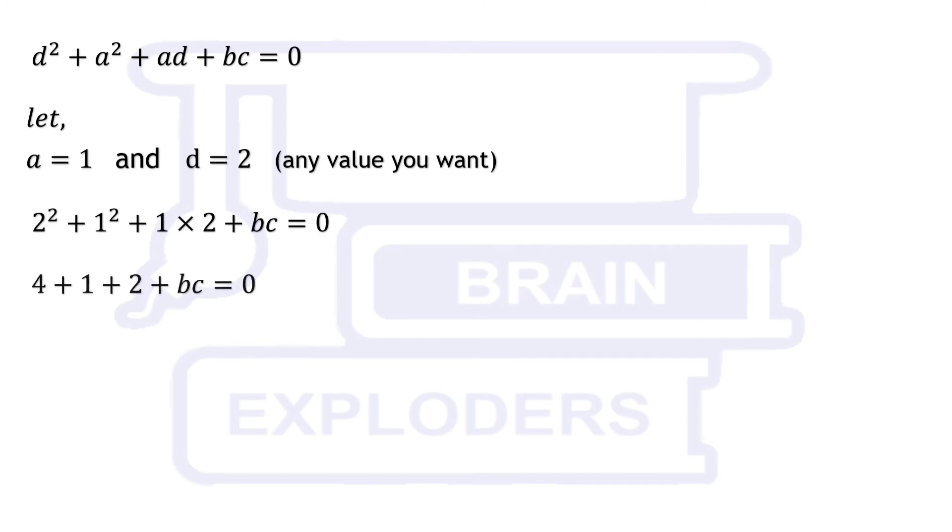Here we have taken A and D as 1 and 2, from which we have product of B and C equal to minus 7. So let us choose the values minus 1 and 7 for B and C respectively. These values satisfy last 2 equations and value of k becomes minus 27.